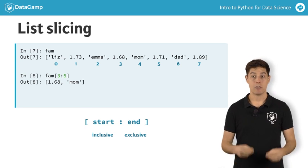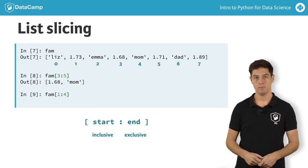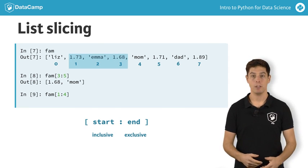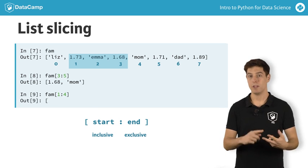With this in mind, can you tell what this call will return? You probably guessed correctly that this call gives you a list with three elements, corresponding to the elements with index 1, 2, and 3 of the fam list.